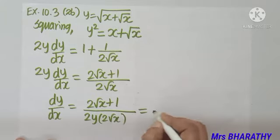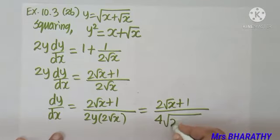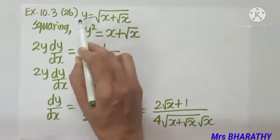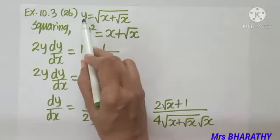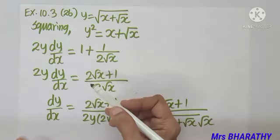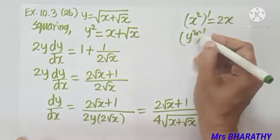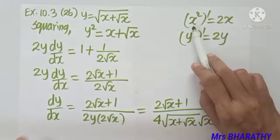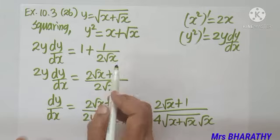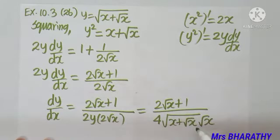Cross-multiplying: dy/dx = (1 + 1/(2√x)) / (2y). Taking LCM: dy/dx = (2√x + 1) / (4y√x). Since y = √(x + √x), we substitute: dy/dx = (2√x + 1) / (4√x · √(x + √x)). That is the final answer.